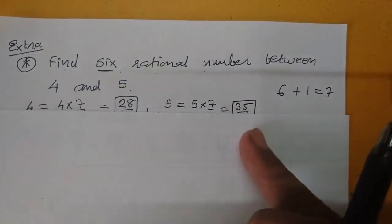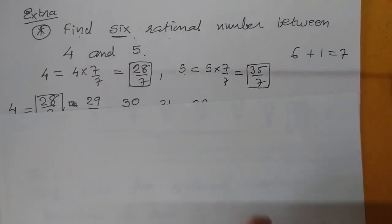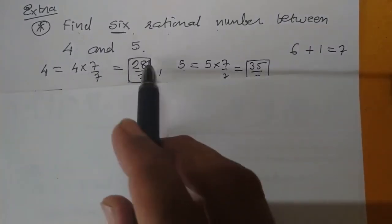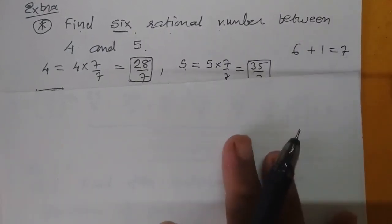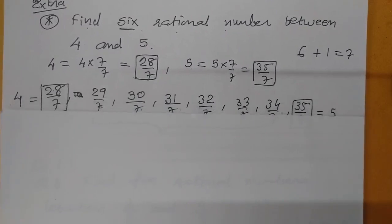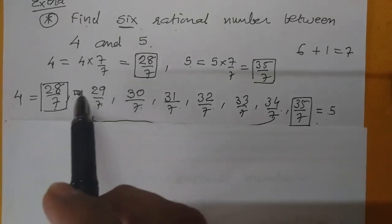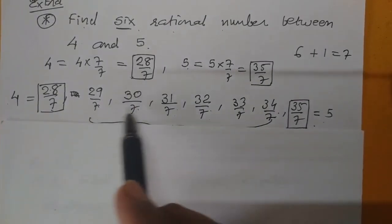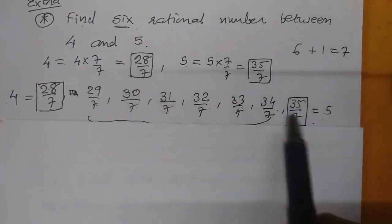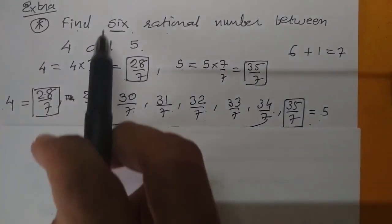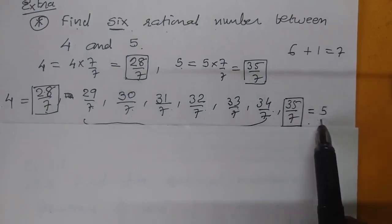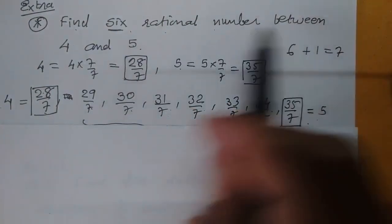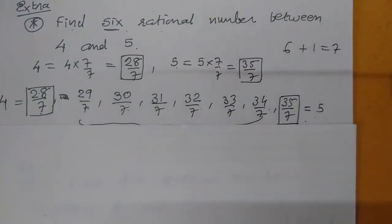Now find six rational numbers between four and five. Six plus one equals seven. Four into seven over seven equals twenty-eight over seven. Five into seven over seven equals thirty-five over seven. In between: twenty-nine, thirty, thirty-one, thirty-two, thirty-three, thirty-four — all over seven. That gives six rational numbers between four and five.